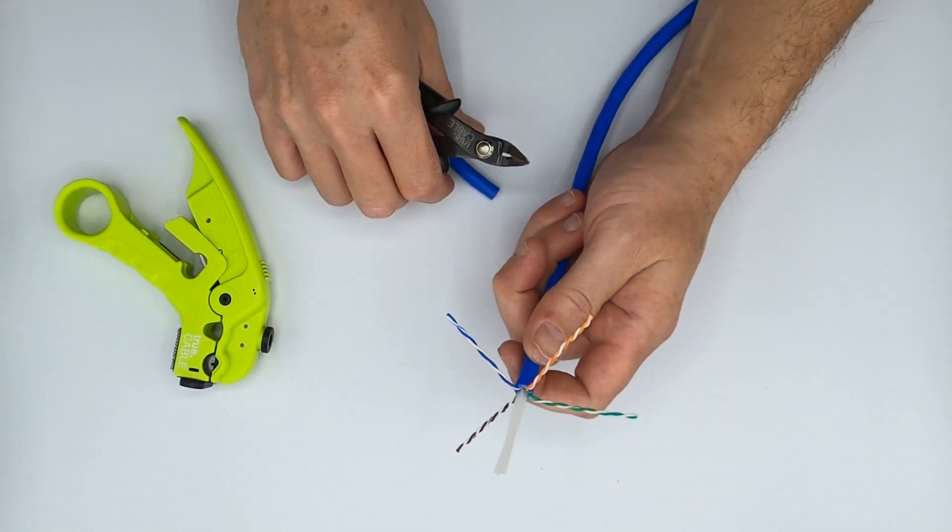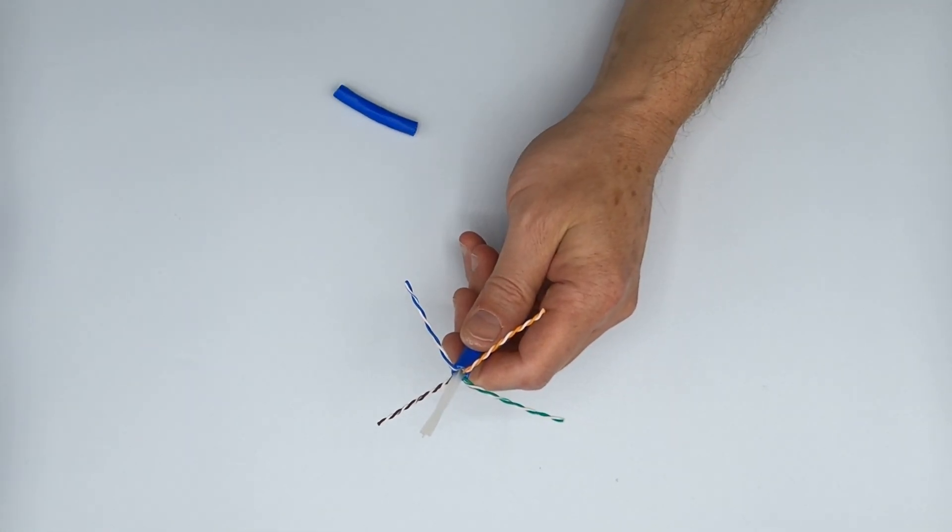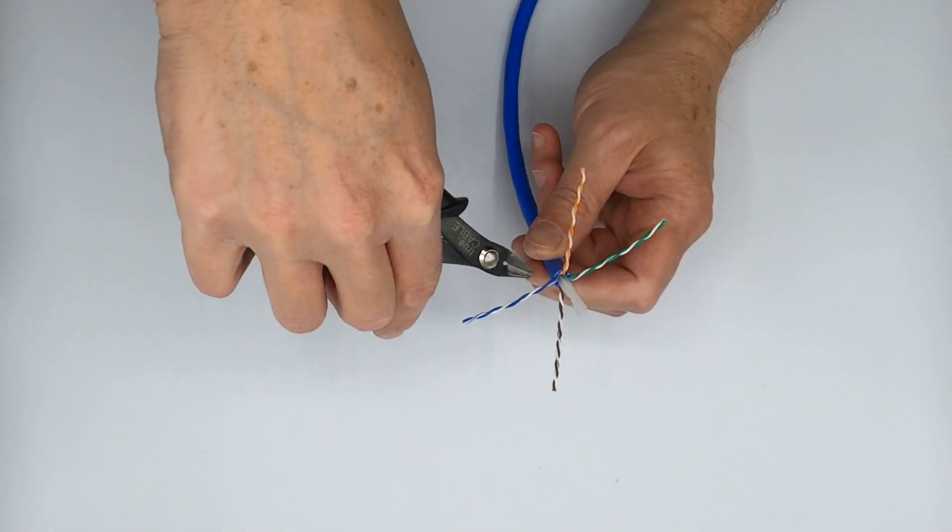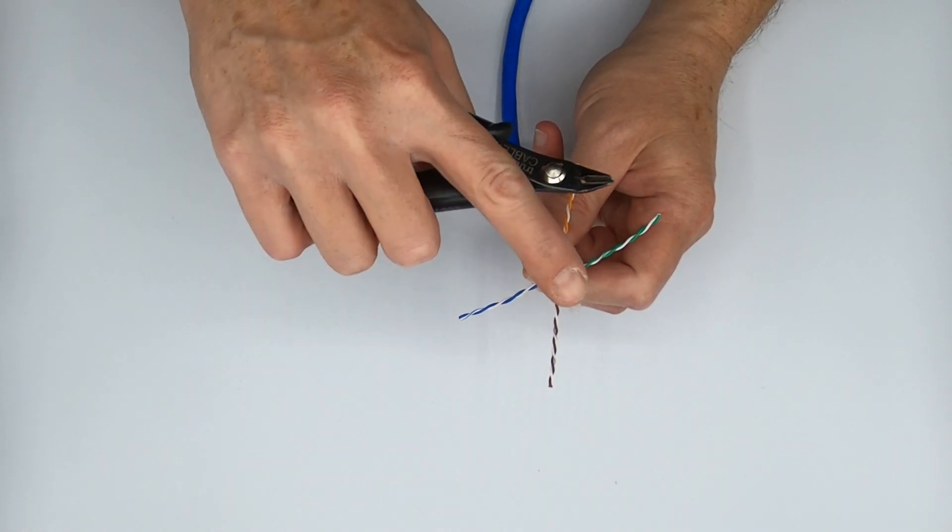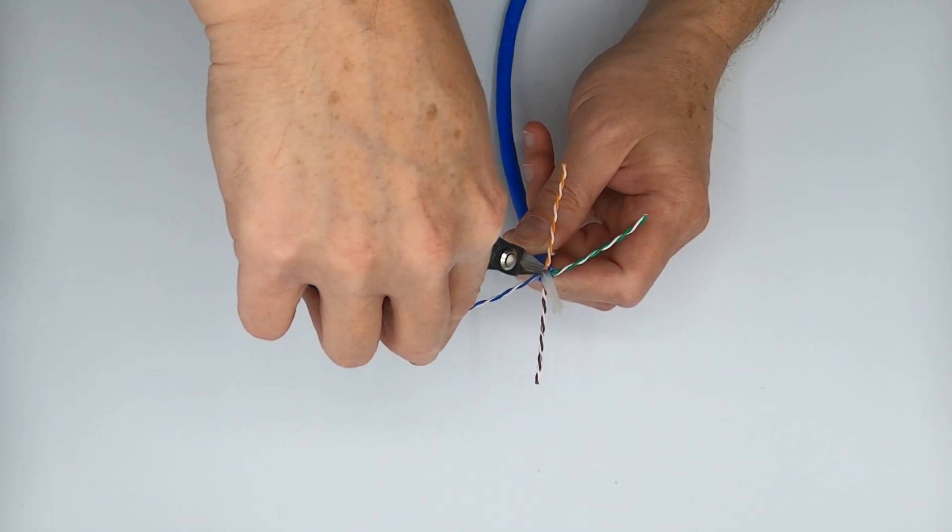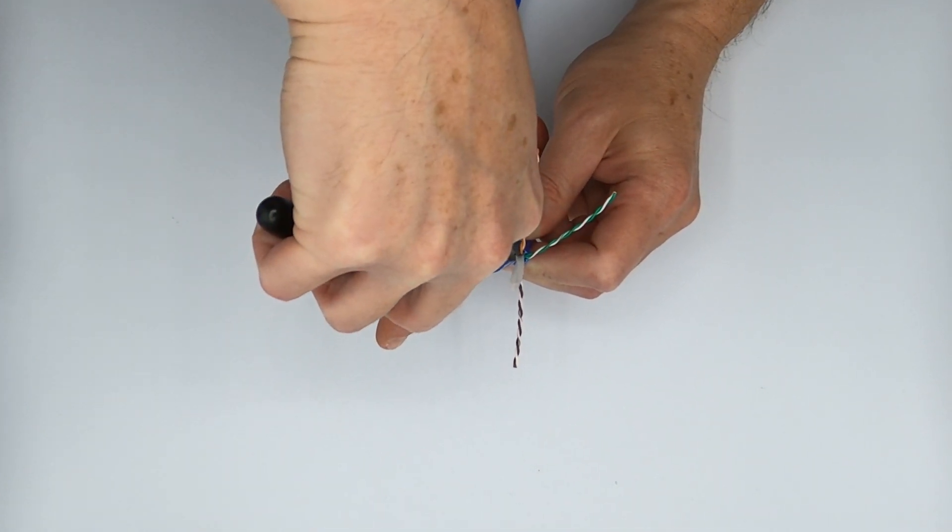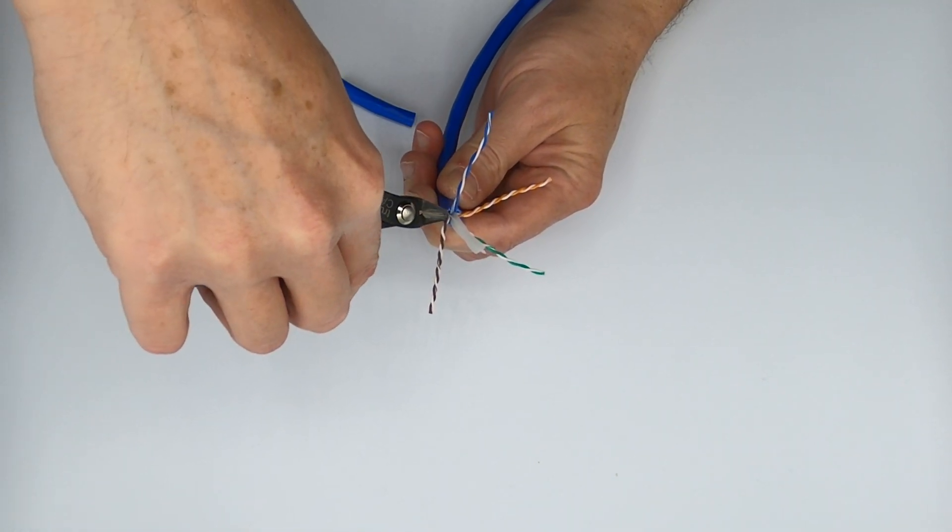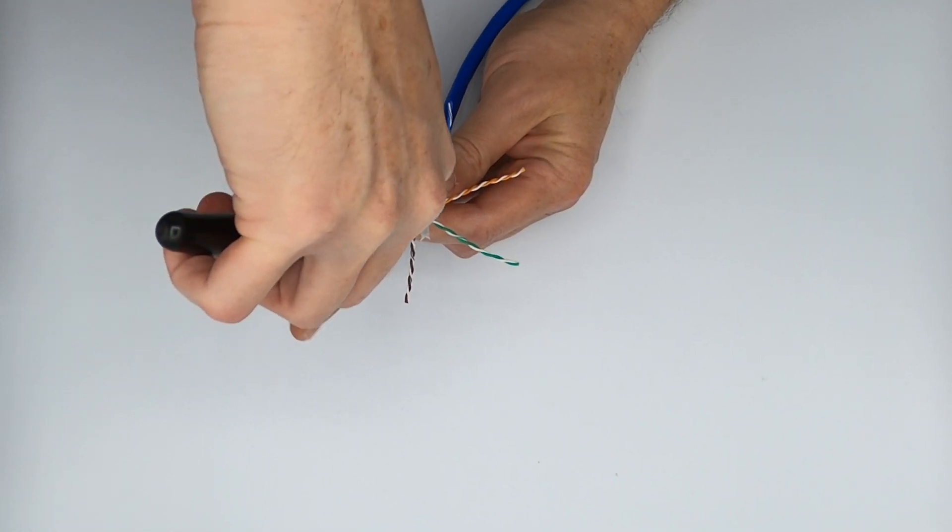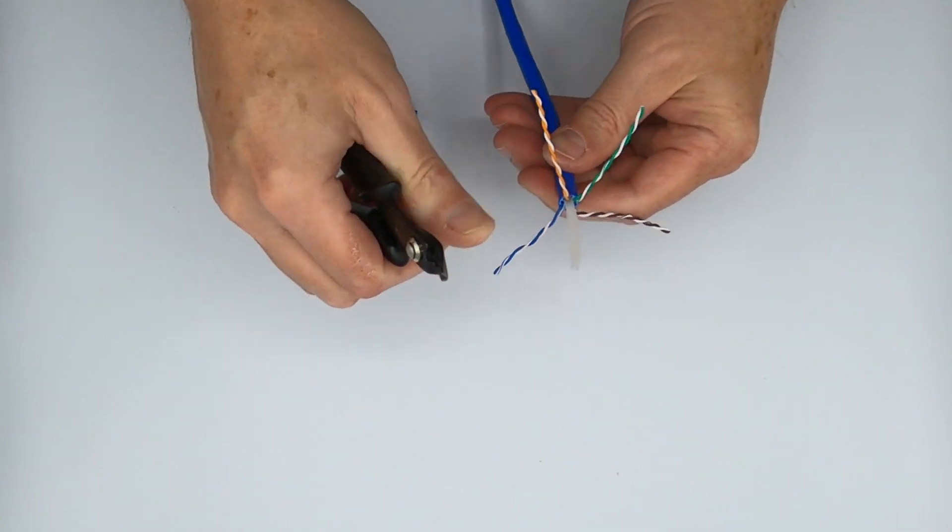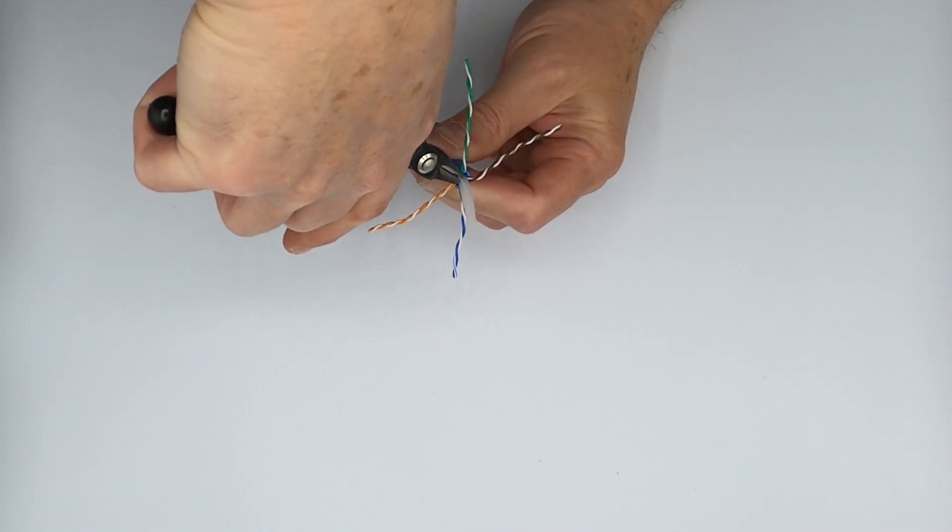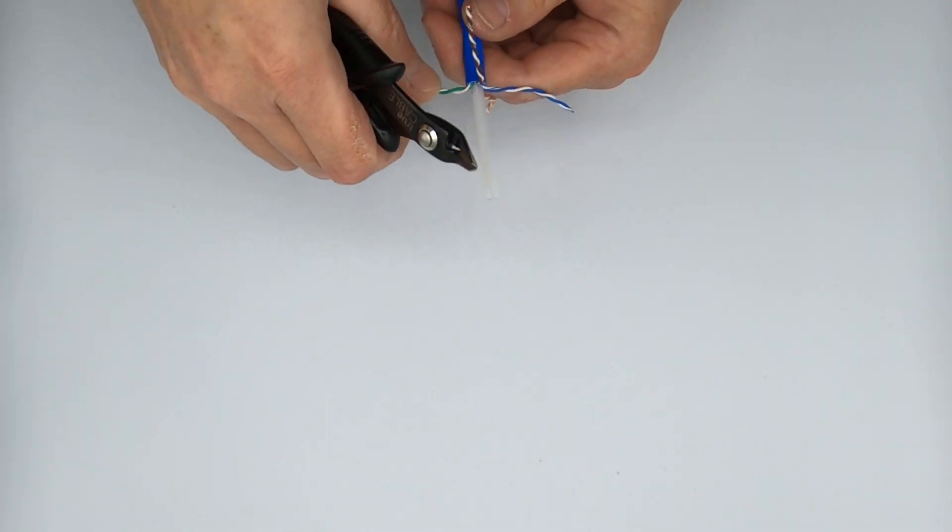The next step is to put these guys into a star pattern so we can get rid of the spline. Now the spline removal requires a little bit of finesse. What I do is I will take these pairs and I will take the tool. Now there's four wings on the spline. You want to cut at a downward angle on each wing by resting the clippers, your flush cutters here, right on the cable jacket.